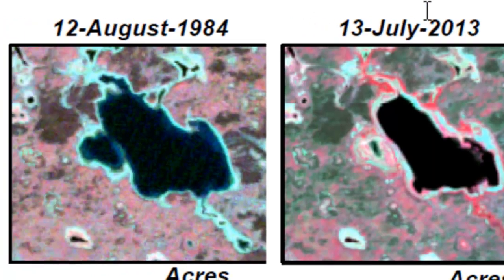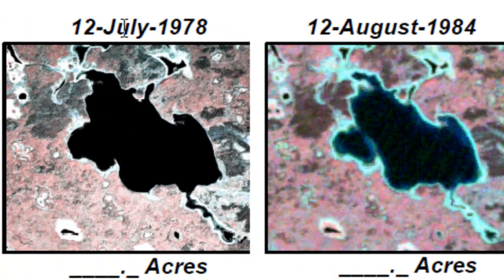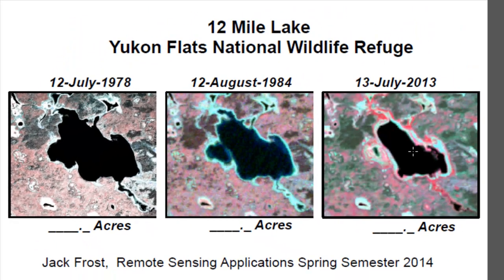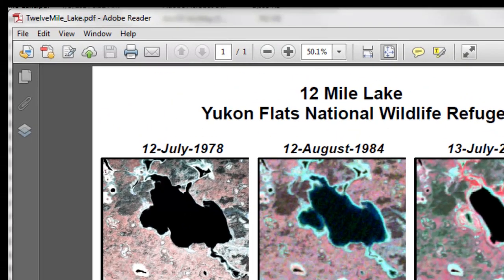You'll geo-reference this color infrared photograph to match your Landsat sensor images that are in the UTM coordinate system, and then using whatever method you want, estimate the acreage of open water for 12-mile lake during these three time periods. Then you would export your ArcMap map to a PDF and email me that PDF.